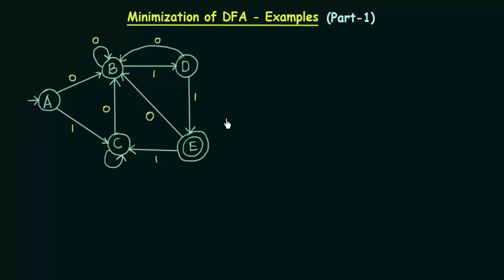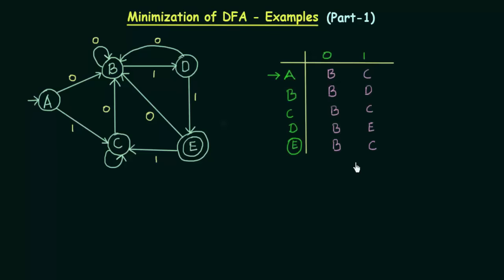The first step is to draw the state transition table for this DFA. Here I have drawn the state transition table. We have five states A, B, C, D, and E. A is the starting state and E is the final state. On getting inputs 0 and 1, these are where these states go to. Now we have to perform the minimization of this DFA. We start with the zero equivalence, then we go to one equivalence, two equivalence, and so on.